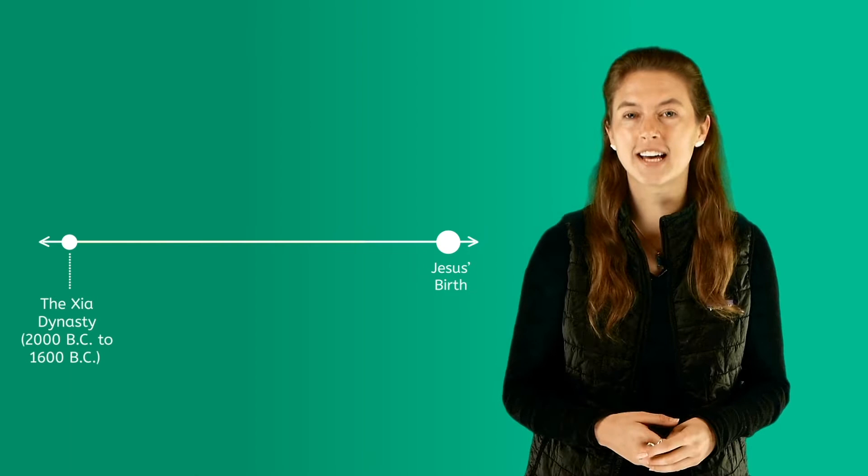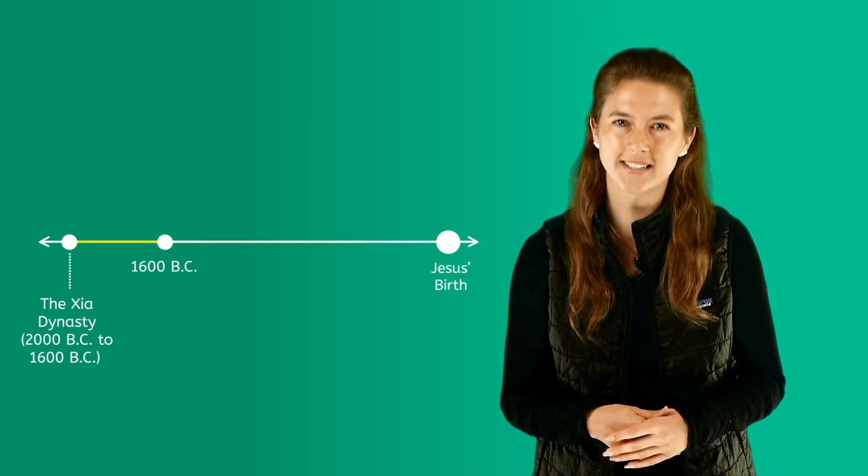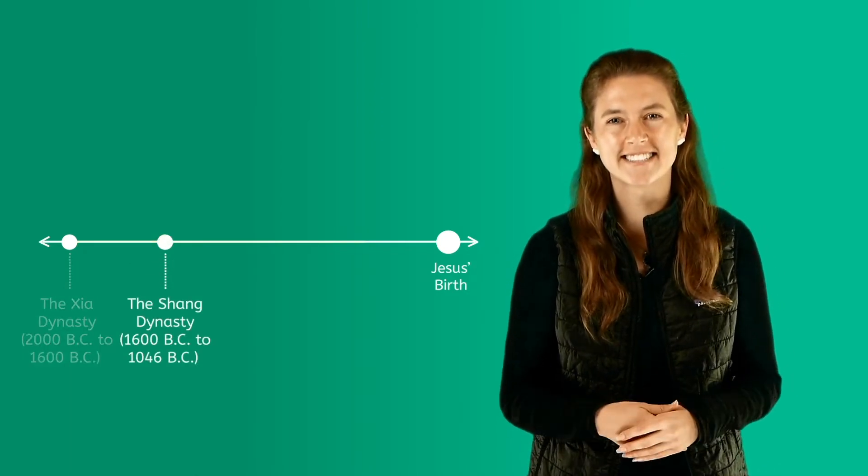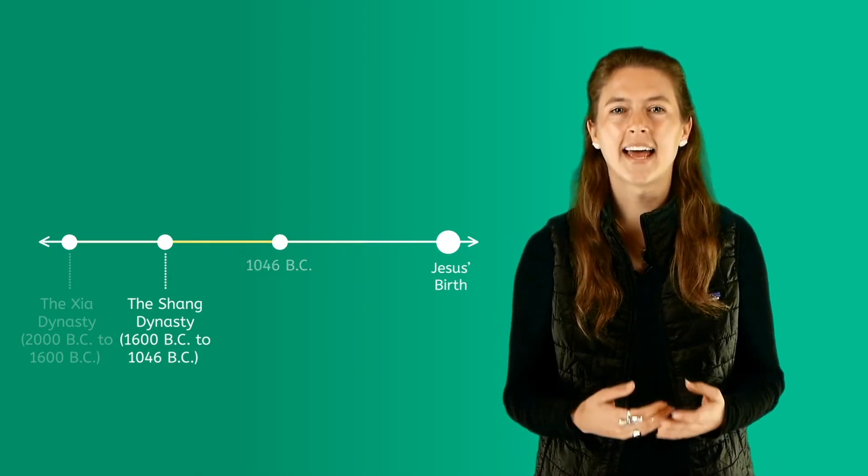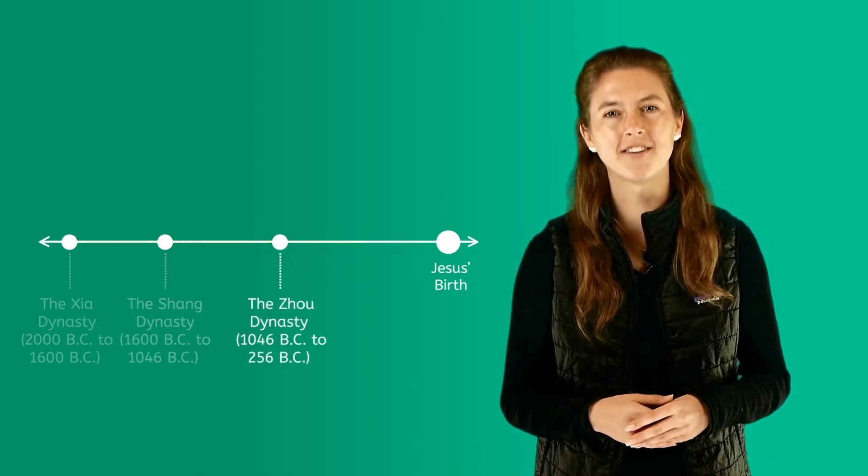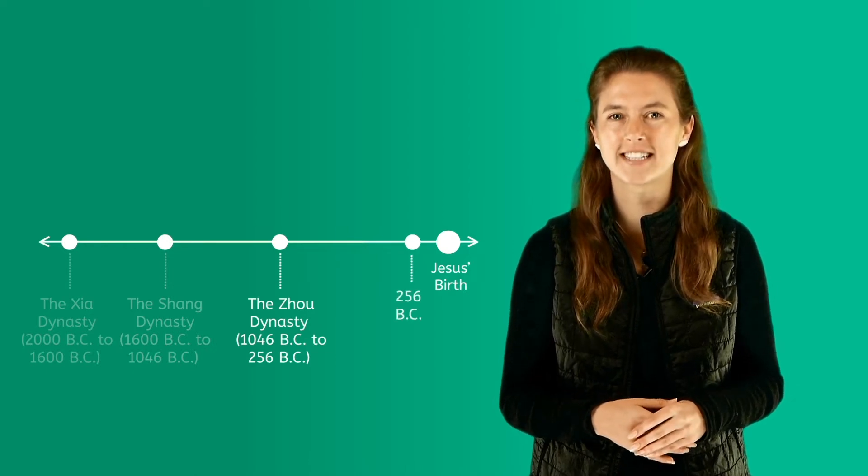We will take a brief look at the first three Chinese dynasties: The Xia dynasty, 2000 BC to 1600 BC; The Shang dynasty, 1600 BC to 1046 BC; And the Zhou dynasty, 1046 BC to 256 BC.